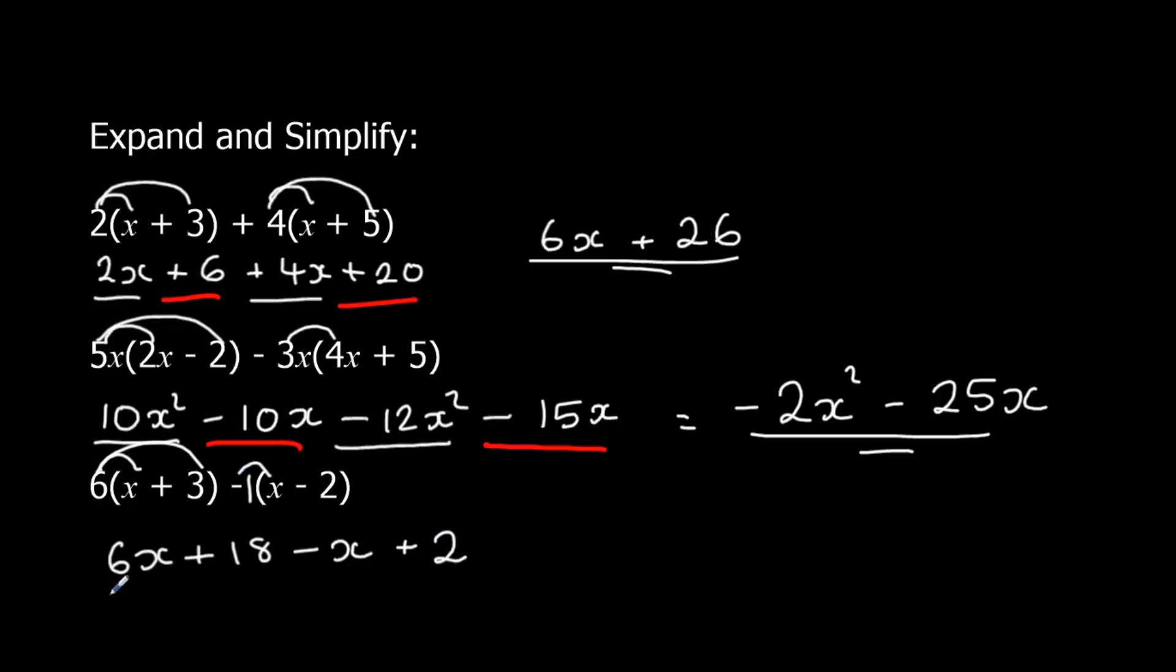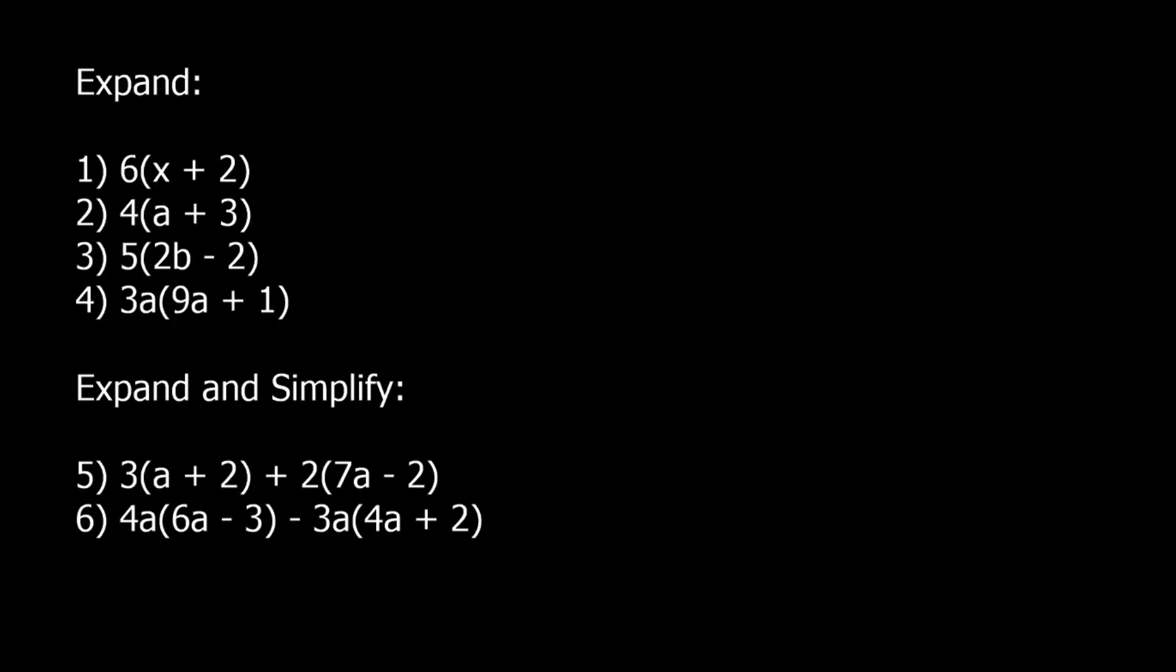So simplifying our x terms and our numbers. So 6x take away 1x, 5x, and 18 plus 2, 20. Okay, pause the video and see if you can answer these questions.